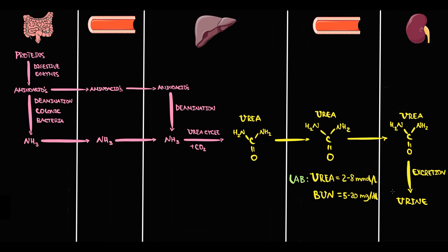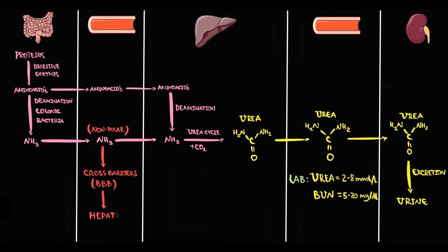Why does the liver convert ammonia into urea? Ammonia molecules are non-polar, and because they have no charge, they easily cross through barriers, including the blood-brain barrier. Ammonia molecules can cause damage to brain tissue, resulting in hepatic encephalopathy. Also, because ammonia molecules are non-polar, we cannot excrete ammonia into the urine. To solve this problem, the liver makes a urea molecule from ammonia molecules and carbon dioxide.